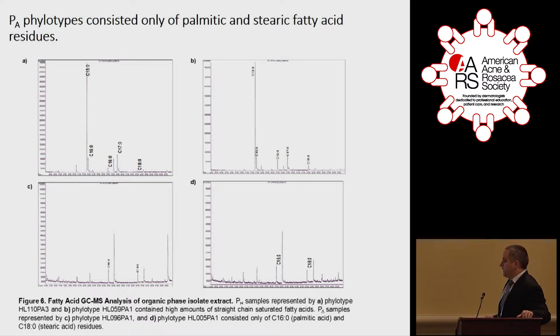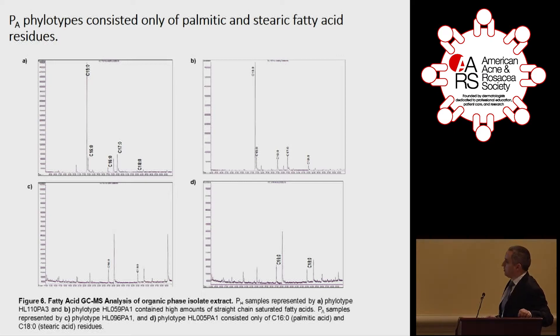From the phenol phase extracted precipitate, we ran GC-MS of fatty acids, and we saw that the PA phylotypes consisted only of palmitic and stearic fatty acid residues.